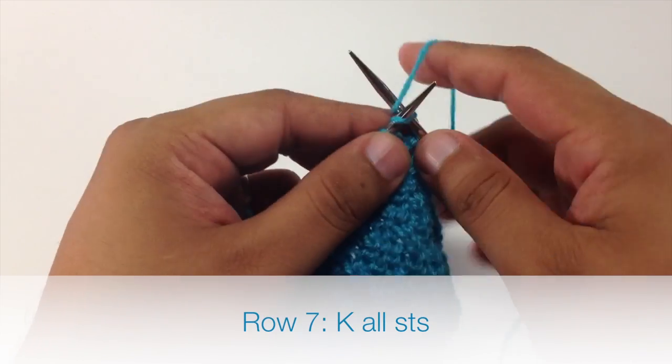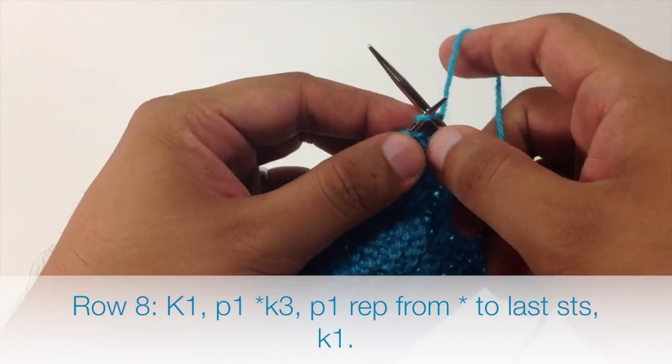Row 7. We are going to knit all stitches. Row 8. We are going to repeat row 6. So we are going to begin by knitting 1.